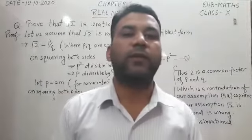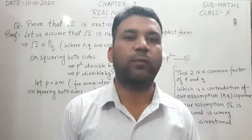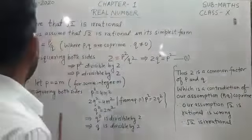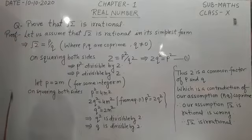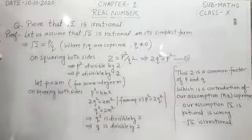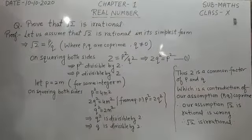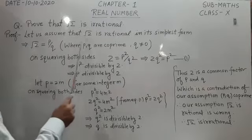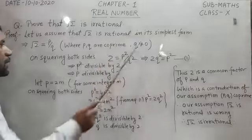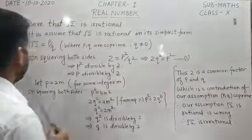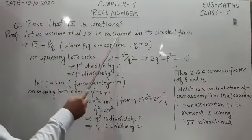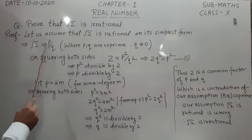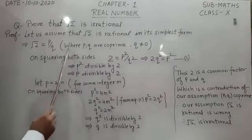Hello everyone. In this video we will discuss one more important question of Chapter 1, Real Numbers. The question is: prove that root 2 is irrational. So let us start. Let us assume that root 2 is a rational number in its simplest form. Since we assume root 2 is rational, we can write it as p upon q.